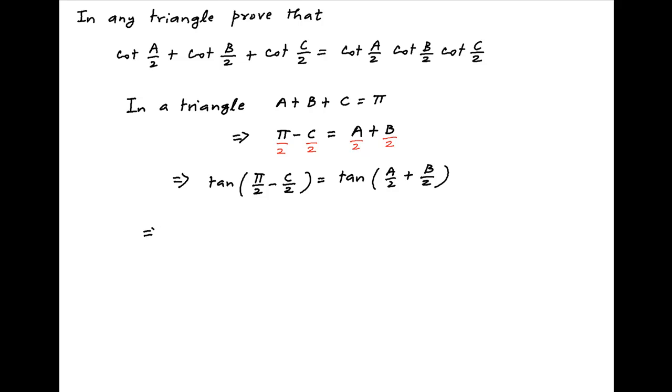The left hand side is equal to cot of C upon 2, and the right hand side can also be written as tan of A upon 2 plus tan of B upon 2 divided by 1 minus tan A upon 2 times tan B upon 2.